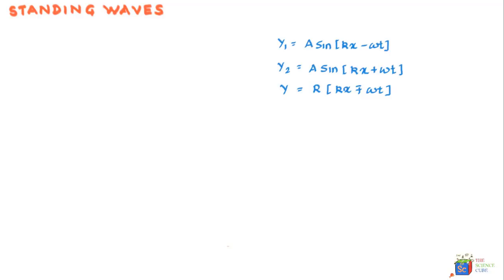And if we combine these two waves, that is y1 plus y2, what we get is a resultant wave. And let's write the equation of that resultant wave. And we'll call that the displacement of that resultant wave as capital Y is equal to y1 plus y2, which in turn is equal to A sine kx minus omega t plus A sine kx plus omega t.